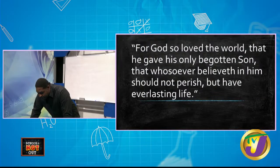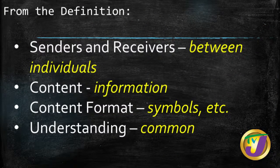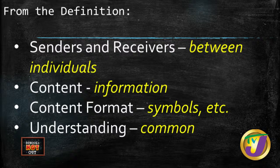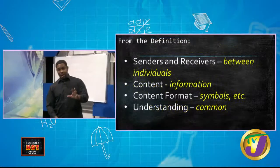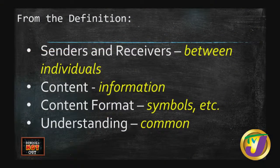That passage came from John 3:16, and you should know the English version. So what are the important things when it comes to communication? It must be between a couple of individuals. There must be content — there must be information. Thirdly, there must be a standard way in which the content is represented. And there must be a common understanding between the parties communicating. That is true for us in real life, and we have to adapt those very same things when it comes to computers communicating.